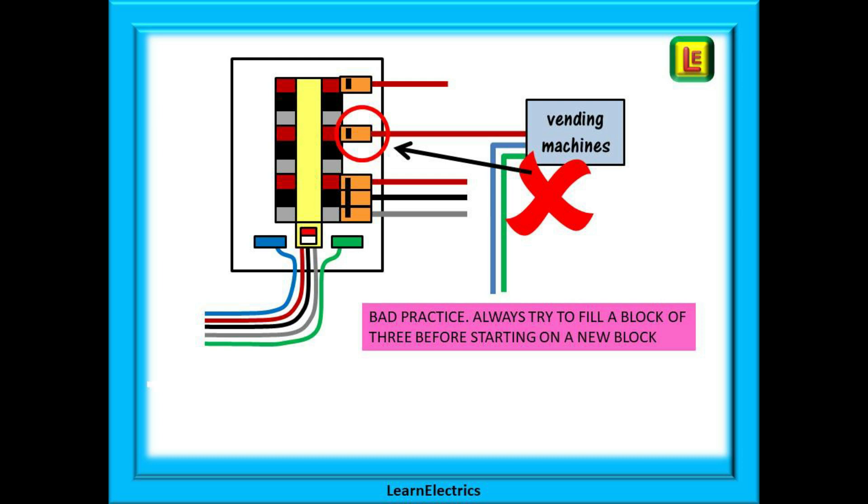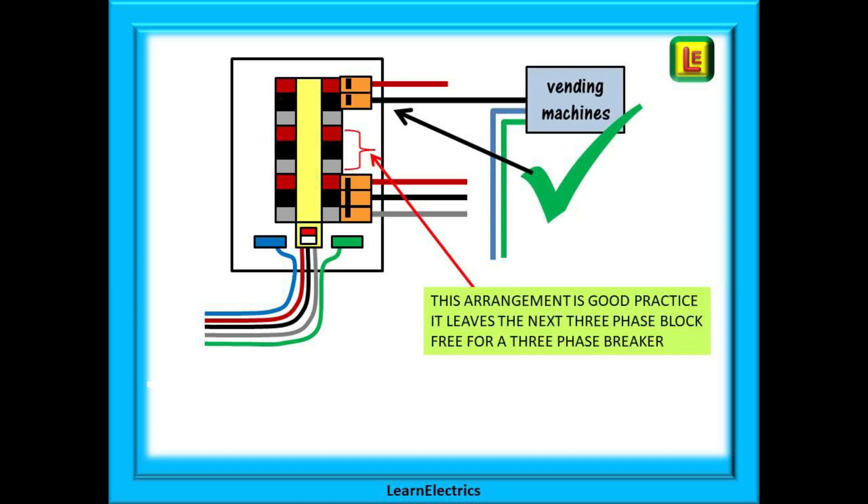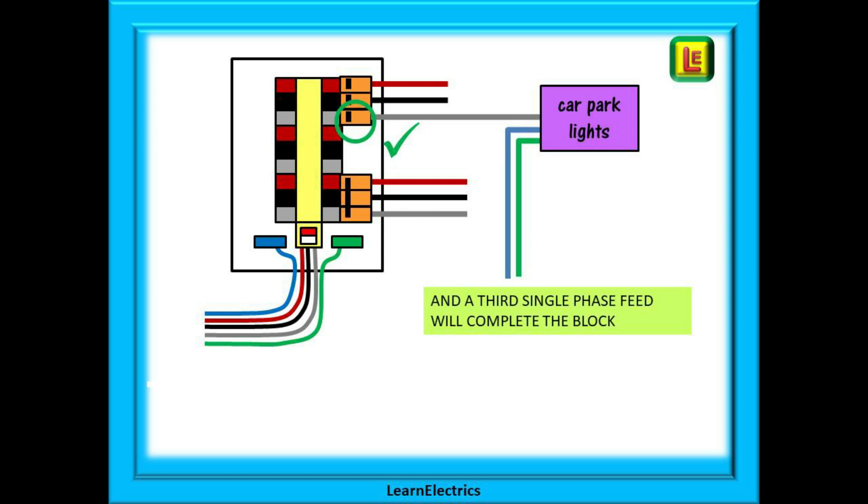And a three-phase breaker should span the brown, black, grey in that order. Again, it is bad practice to have a three-phase breaker across, say, grey, brown, black. So, let's rearrange things. This is the vending machine correctly connected into the board and it leaves the next single-phase way, the grey, free for another single-phase circuit and the three-phase blocks are free also. And now we can add a single-phase circuit for the car park lights. This fits nicely into the empty grey space.